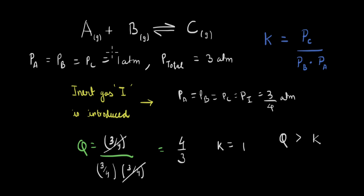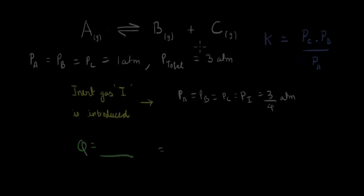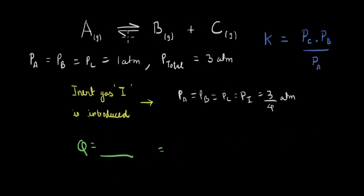What happens if you have a dissociation type reaction, where A dissociates to give B and C? Let's carry out a very similar calculation and see how the equilibrium shifts. In this case, the rate constant is going to be the partial pressure of C times the partial pressure of B divided by the partial pressure of A.